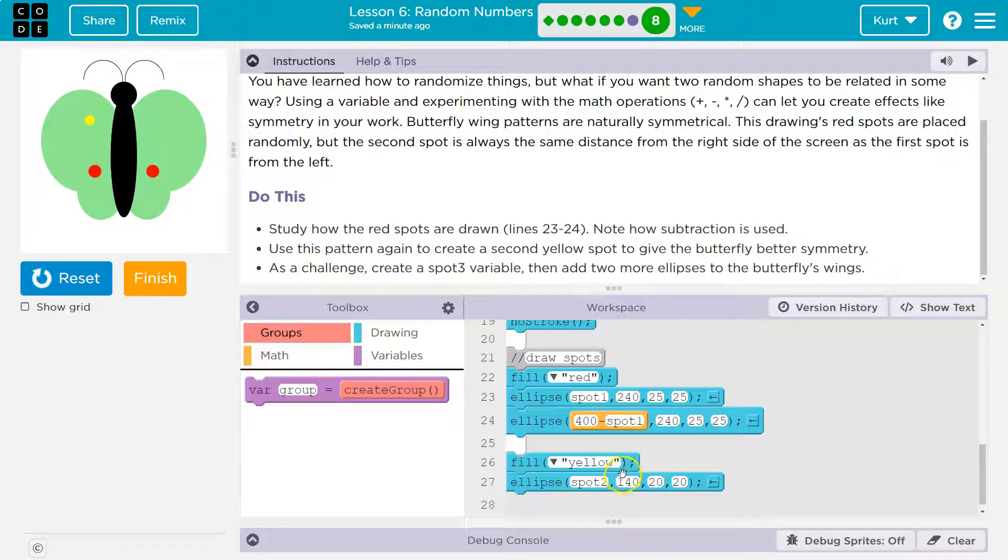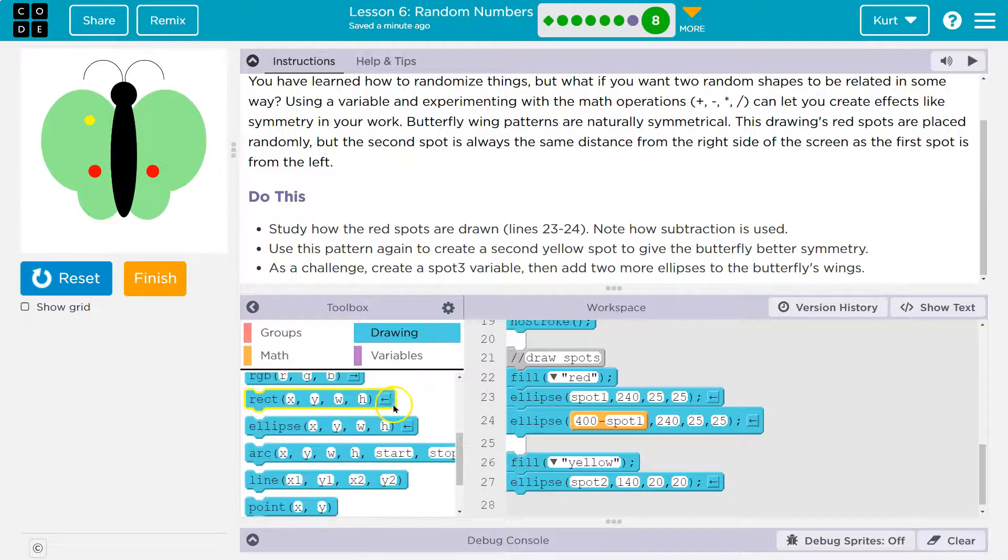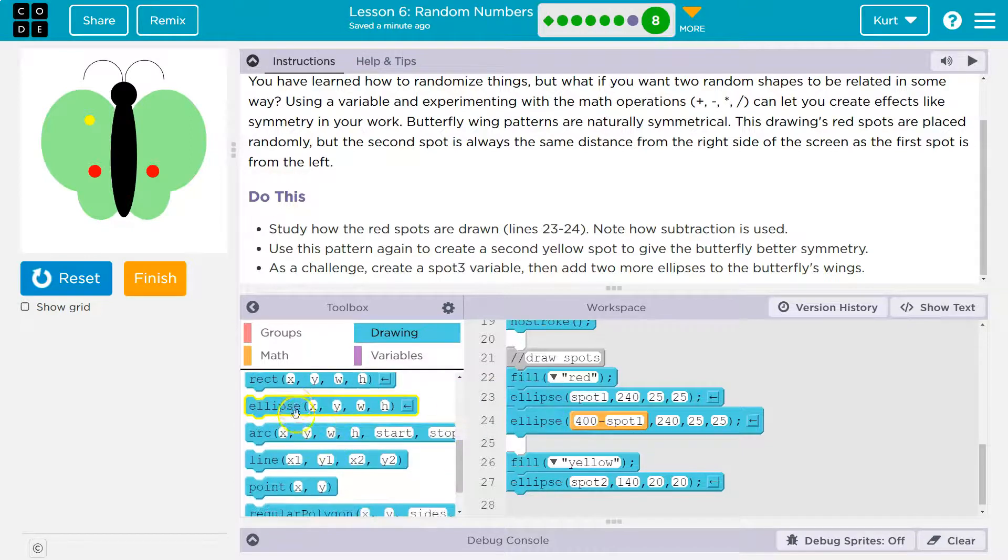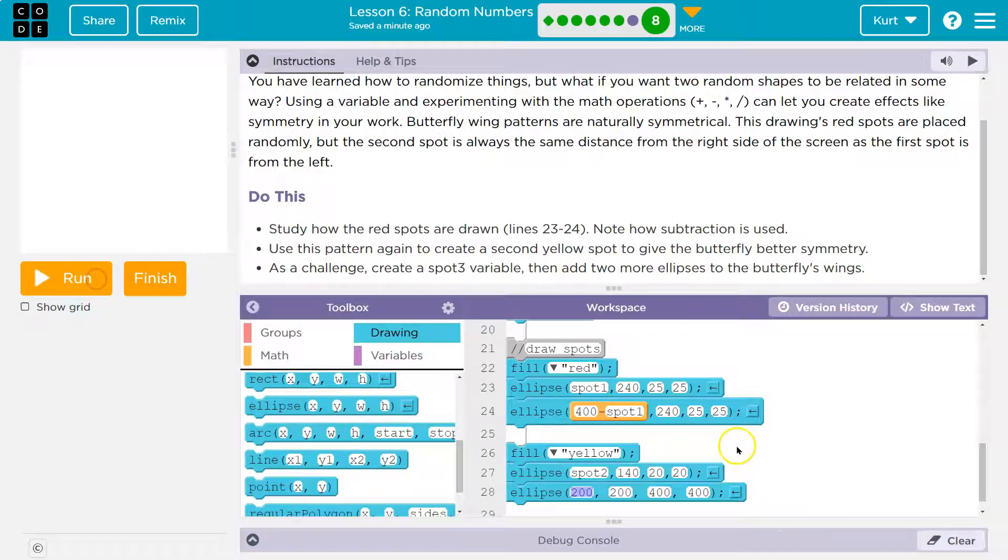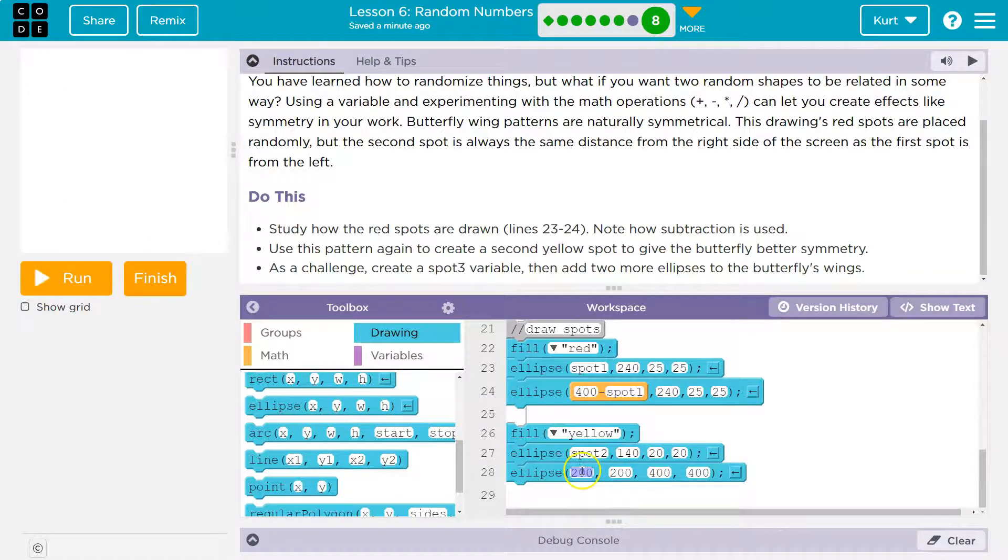Okay, so we have a first yellow spot here. All right, so I'm going to steal their idea or their example, I guess. And I'm going to go into drawing and then grab ellipse. All right, we have an ellipse. Oh, I should hit reset. We have an ellipse.